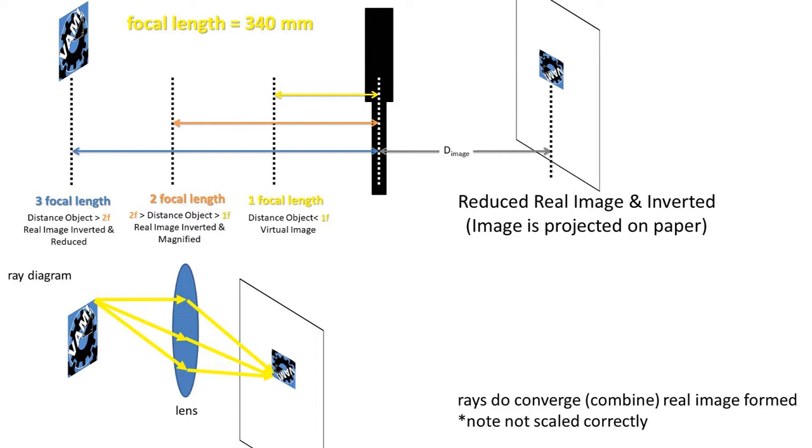If the object is placed beyond the two focal lengths, then the image will be a reduced real image and inverted. A real image refers to that it can be projected onto a screen or piece of paper. This is done at a certain point where all the light rays converge or combine for the same point on the object.